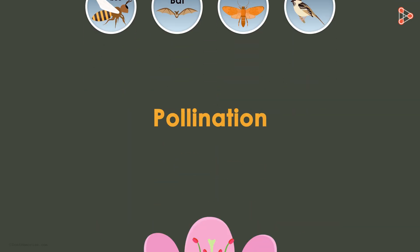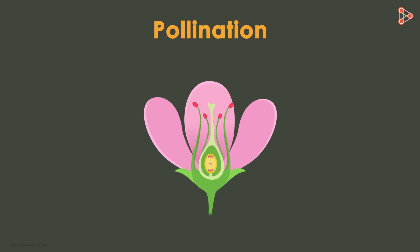The process of pollination makes sure that the pollen grain safely lands on the stigma. But what happens next? Does this lead to fertilization directly, or are there any intermediate steps? We will answer all these questions in the next video.